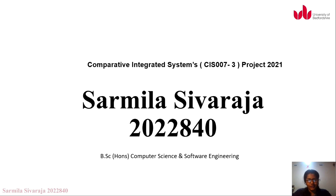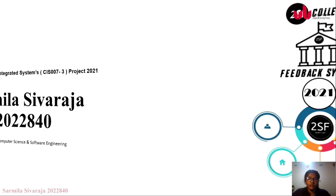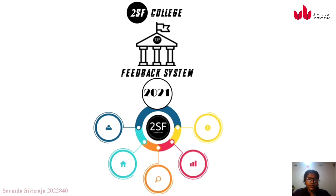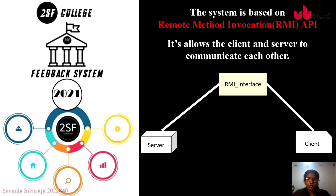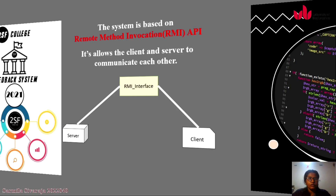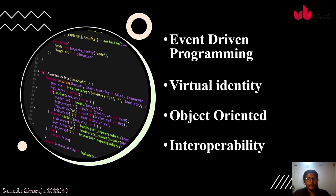My name is Sharmila Siraja, my student ID is 2022840. I'm following basic computer science at Virginia University of Great Fortune. This is my CIA007 project 2021. This project provides a college feedback system for students. The system is based on the Remote Method Invocation API, which allows the client and server to communicate with each other. This system satisfies event-driven programming, virtual identity, object-oriented, and interoperability.